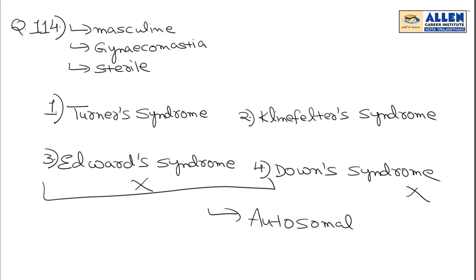Let's check each one. Turner's syndrome — the affected individual has the karyotype 44 + X0. This means there is no Y chromosome in the person. Without a Y chromosome, the person is not male. So the answer cannot be Turner's syndrome either.